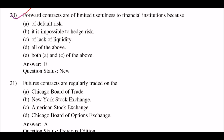Next question: forward contracts are of limited usefulness to financial institutions because — option A: of default risk; option B: it's impossible to hedge risk; option C: of lack of liquidity; option D: all of the above; option E: both A and C of the above. The right answer is option E: both A and C. Forward contracts are of limited usefulness because of default risk and lack of liquidity.